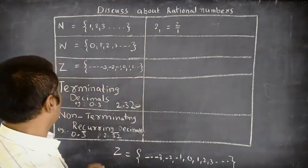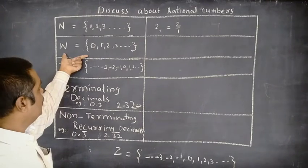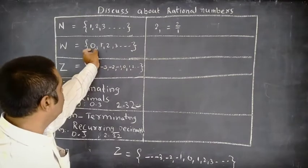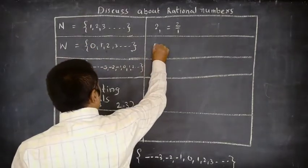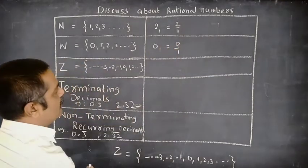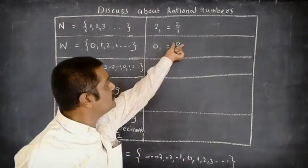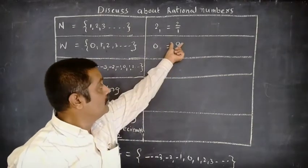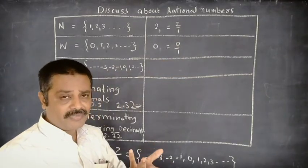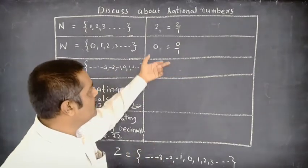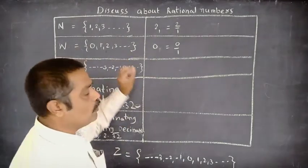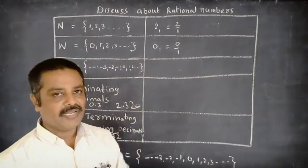Next, for whole numbers: select a number from the group of whole numbers, for example 0. We can write 0 as 0/1. It is also in the form P/Q. The denominator is not equal to 0, and both 0 and 1 belong to integers. So every whole number is a rational number.